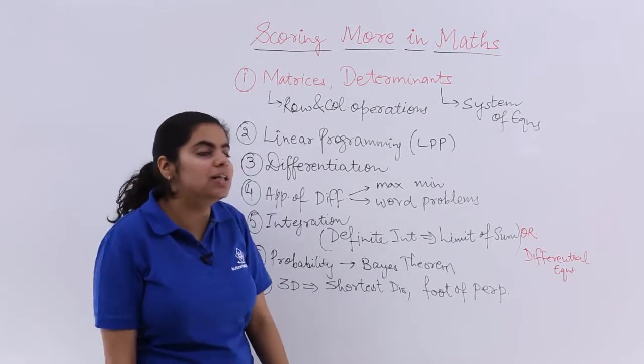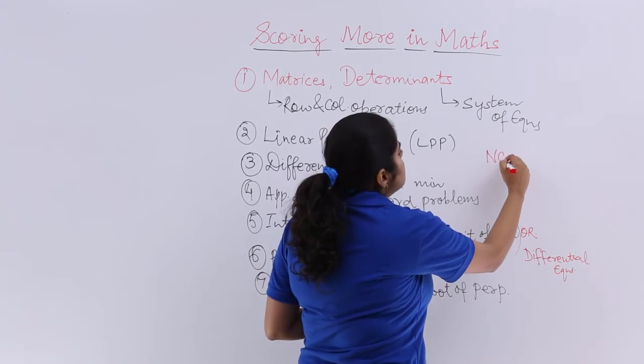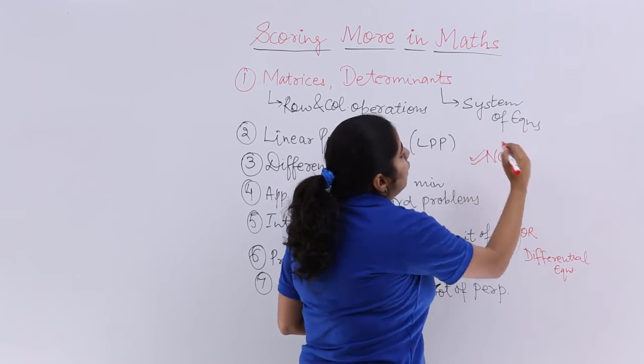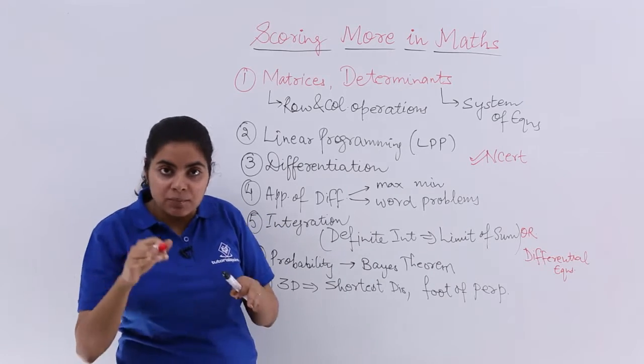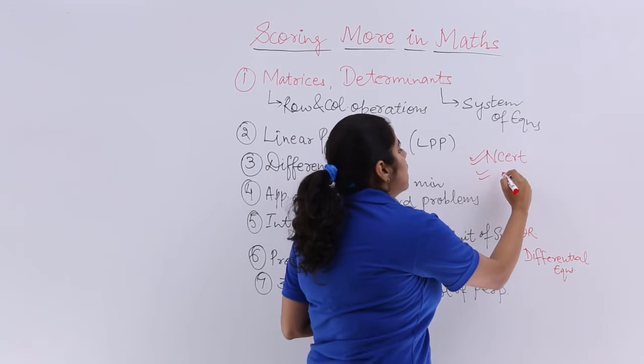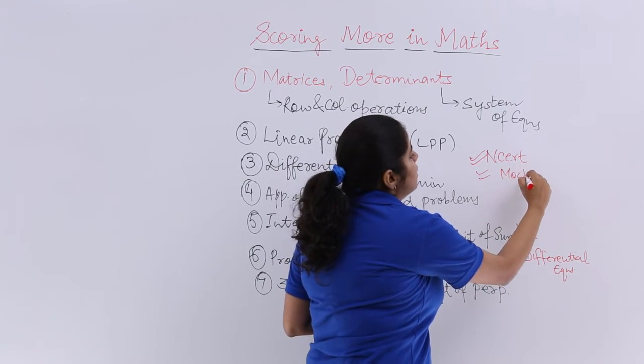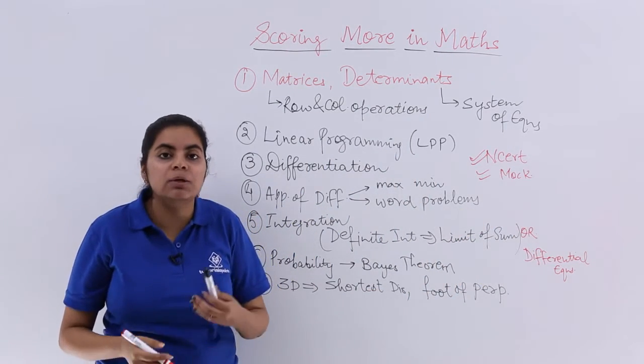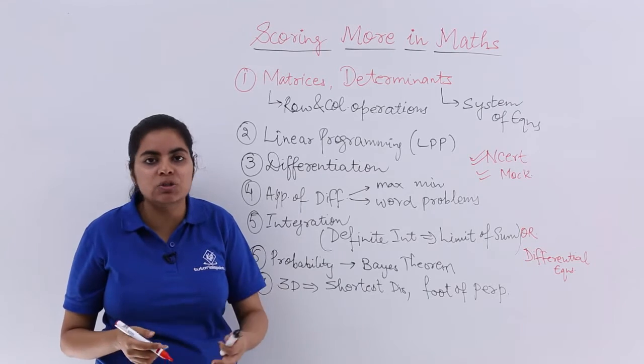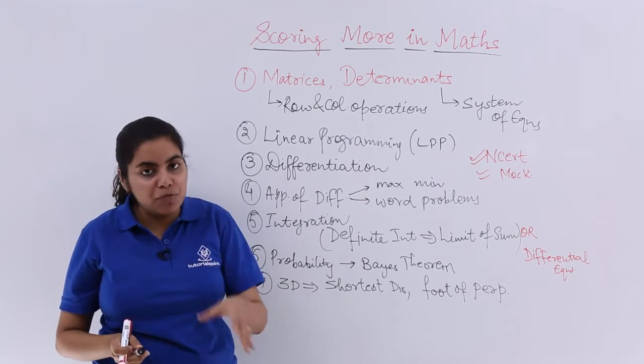Firstly, you have to solve all these chapters from your NCERT book. After you have covered your NCERT 2 to 3 times, then you have to go for the mock papers, solved previous year papers, solved previous year 10 year examination papers or 7 year. And after you have done this, then go for some online tests that you can opt for.